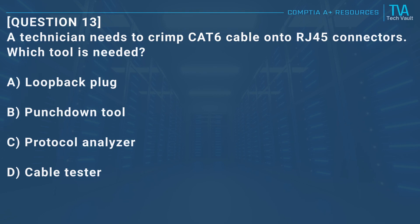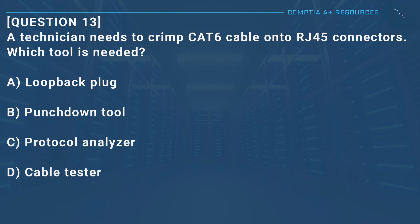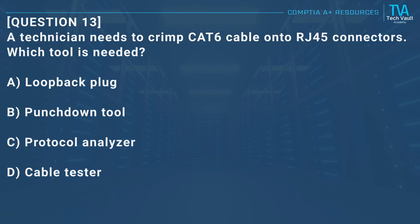Question 13: A technician needs to crimp CAT6 cable onto RJ-45 connectors. Which tool is needed? A, loopback plug. B, punchdown tool. C, protocol analyzer. D, cable tester.